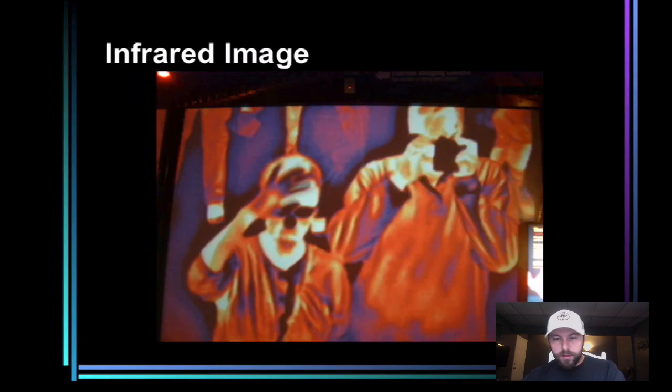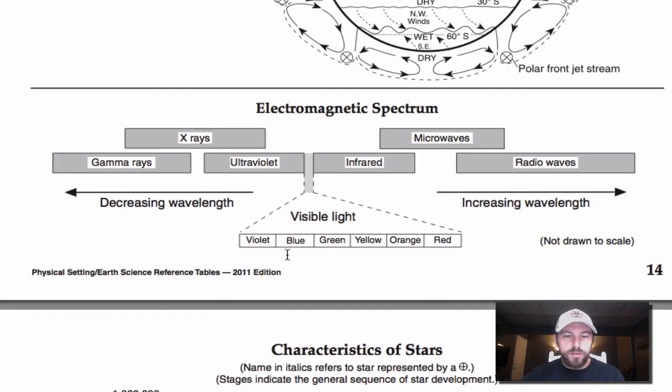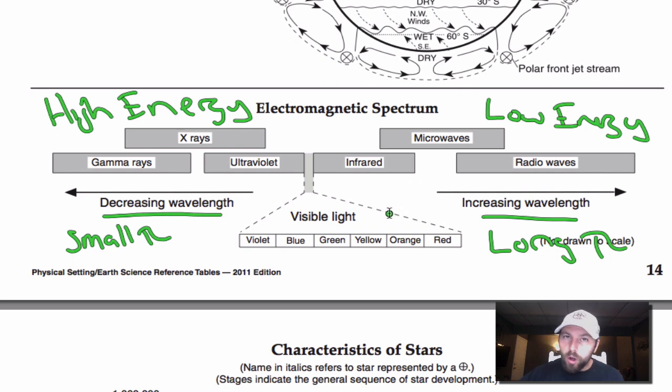I just briefly want to go back to our reference table. So when we go back to the reference table here, we have small wavelengths and we have increasing wavelengths on the right-hand side. Also, besides being small wavelengths, these are high energy. Over here, long wavelengths is going to be low energy. So it's just something also to remember.